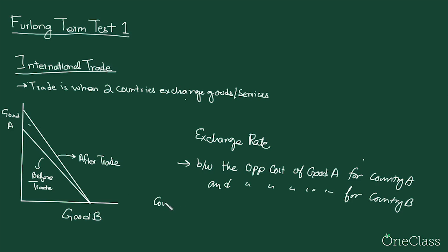For example, for country A, the opportunity cost of producing good A is 0.5x for x units. For country B, it is 1.5 units of x. The exchange rate for A should be between 0.5 units of x and 1.5 units for both countries to trade.